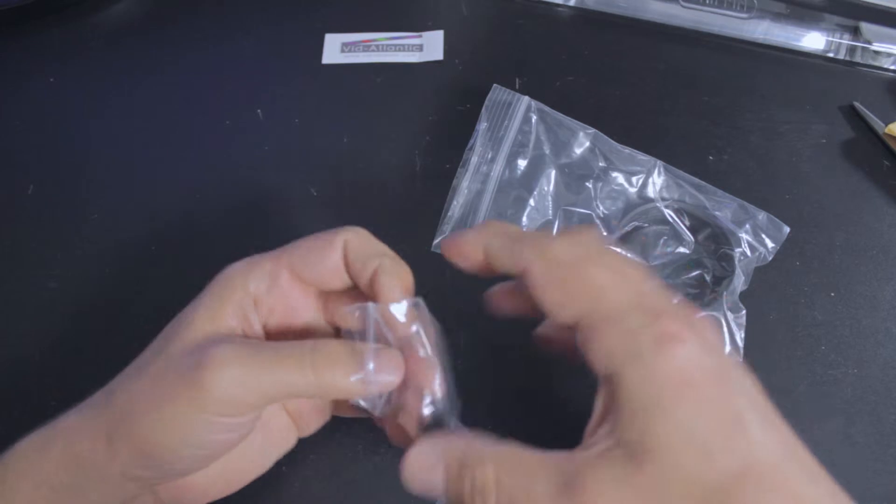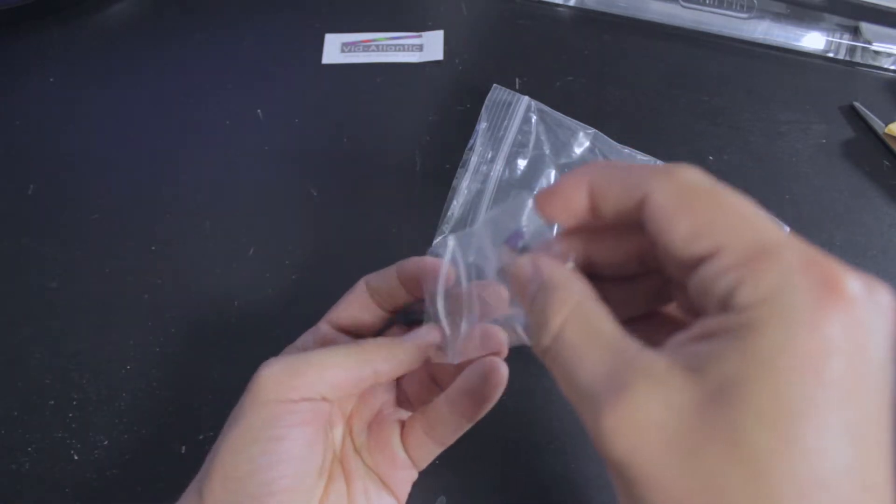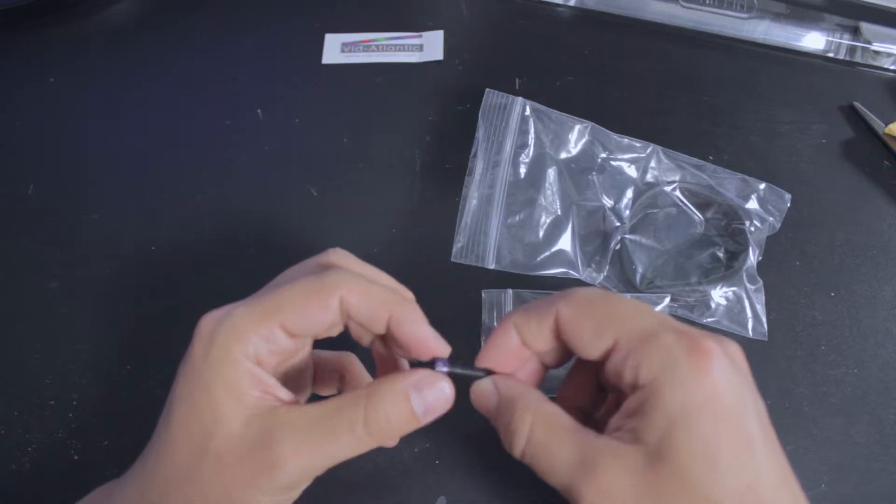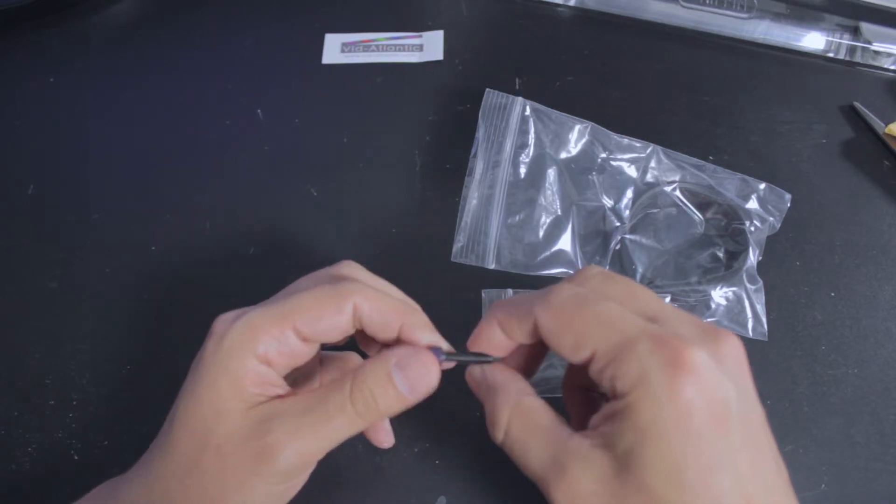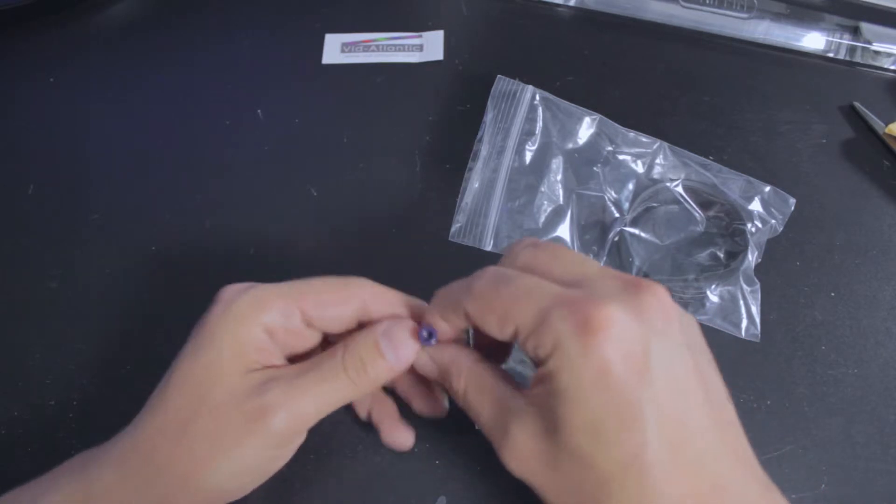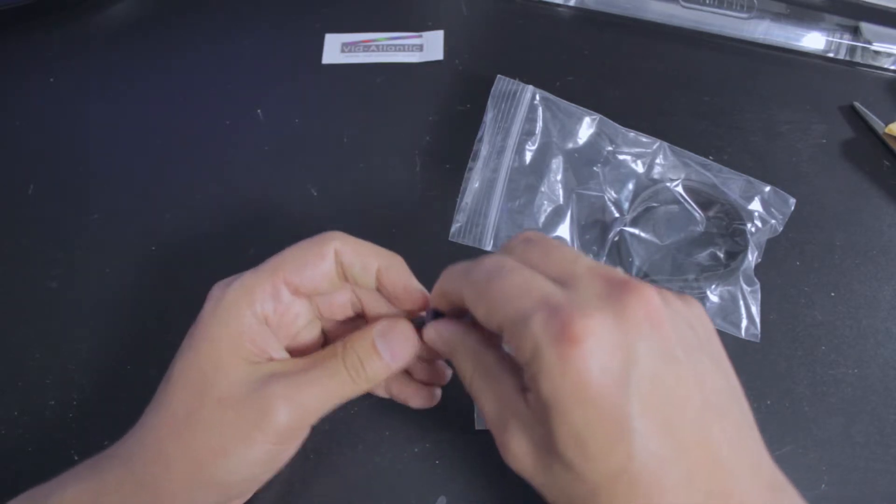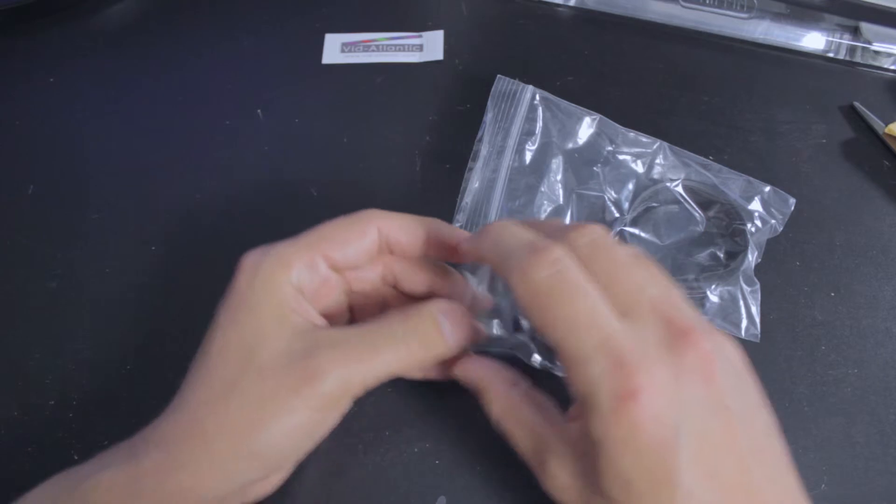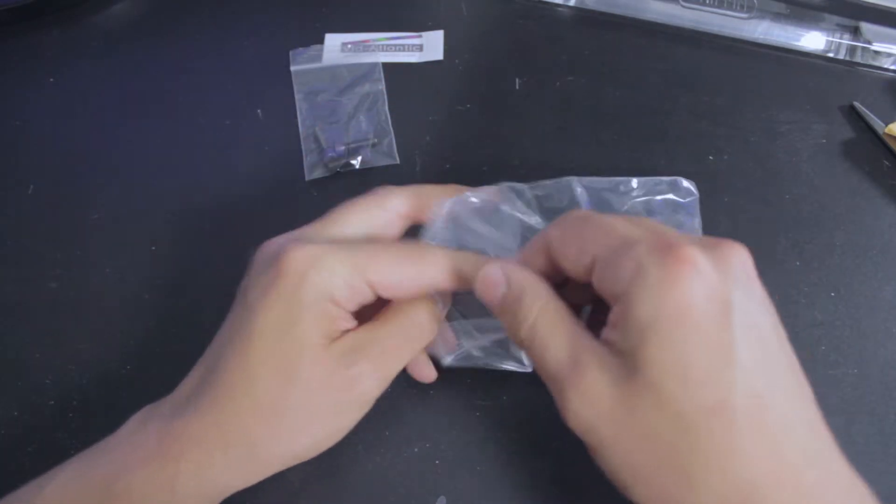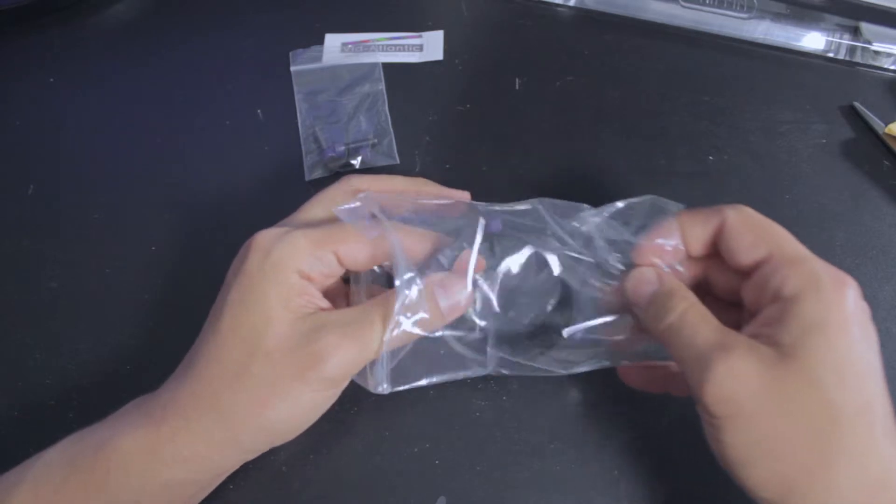It's got an allen key hole so you can tighten it with an allen key or with your fingers if you can tighten it tight enough. Comes with three of those in this little baggie.